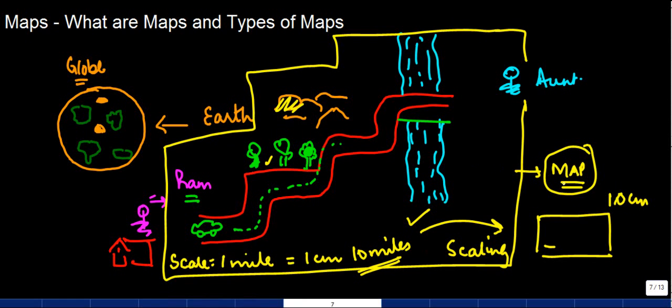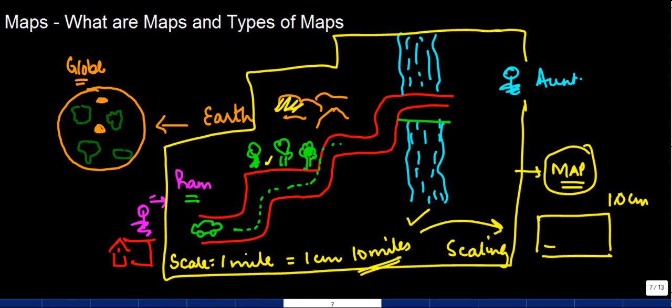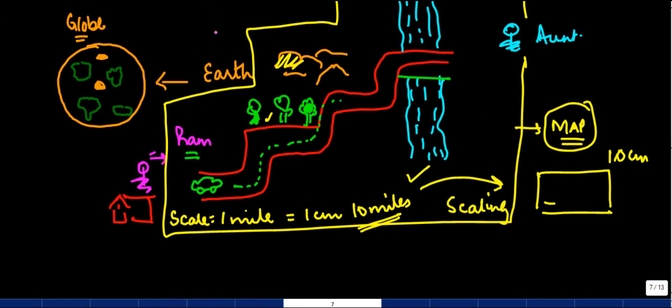Now most of these maps are divided into various categories. Let's talk about them. The first one is the physical map. So what does a physical map do? The physical map is going to tell you what are the features of the earth.